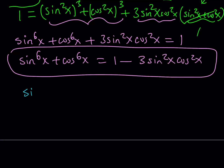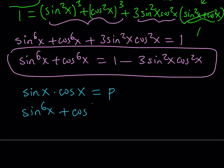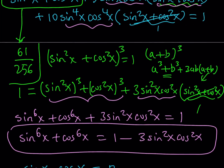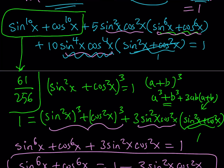What we can do here is use substitution. Let's replace the product with P — let's call sine x cosine x equal to P. When I do that, the sum of the 6th powers becomes 1 minus 3P squared. And the product of the 4th powers from here is going to be 10 times P to the 4th. Starting with that, you get a nice equation.